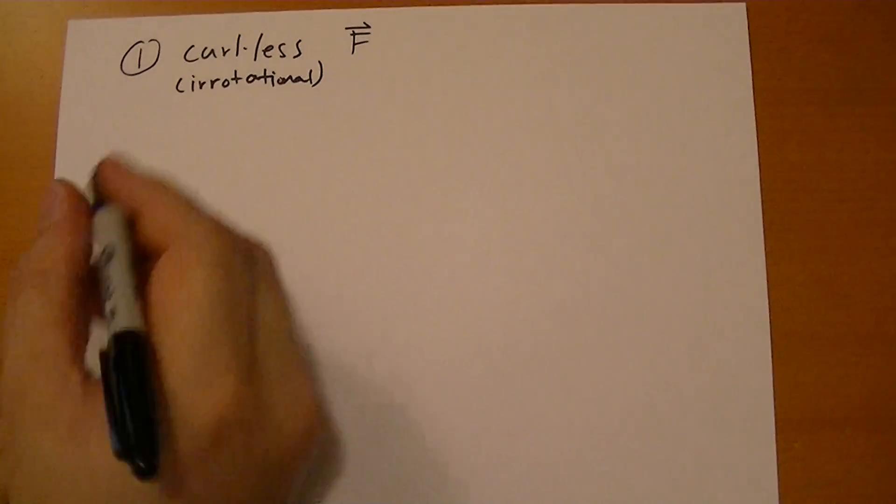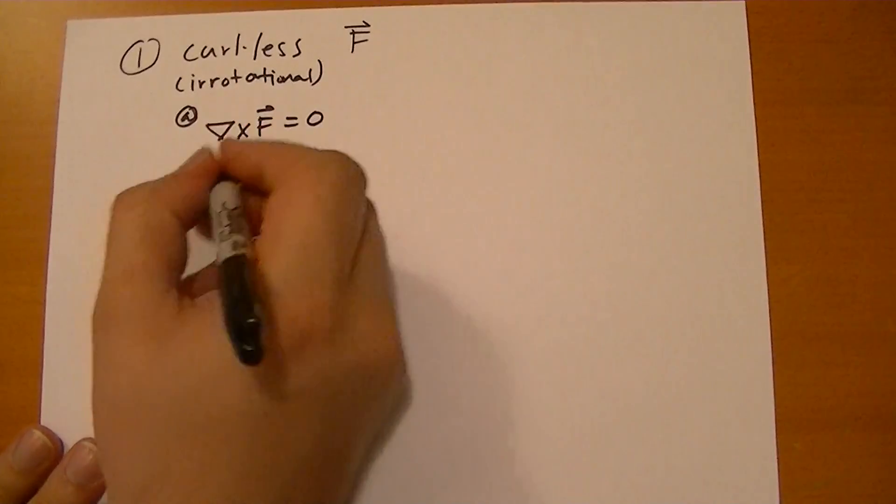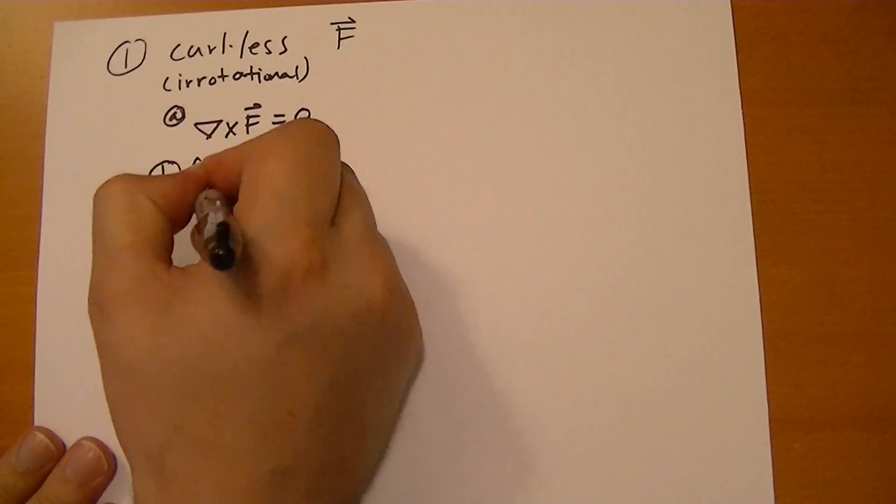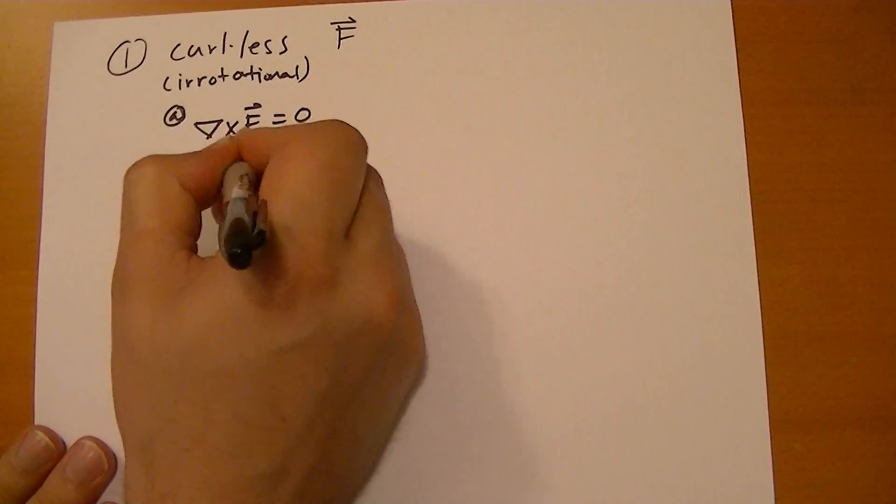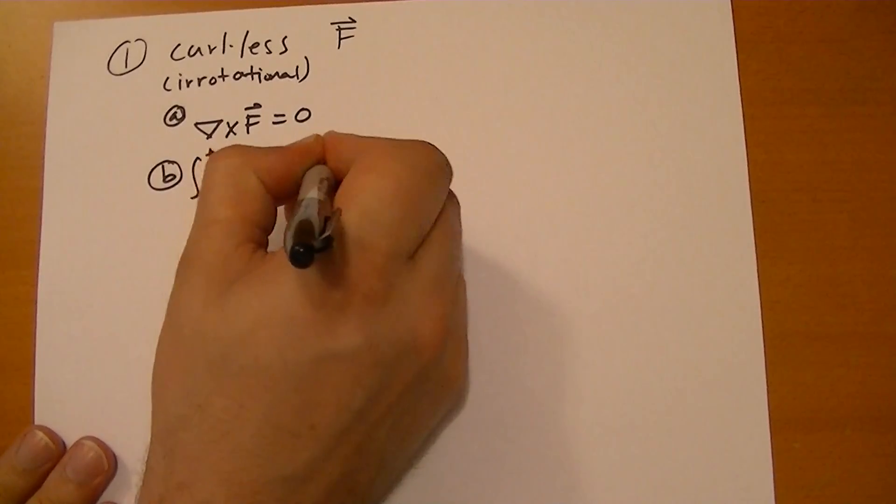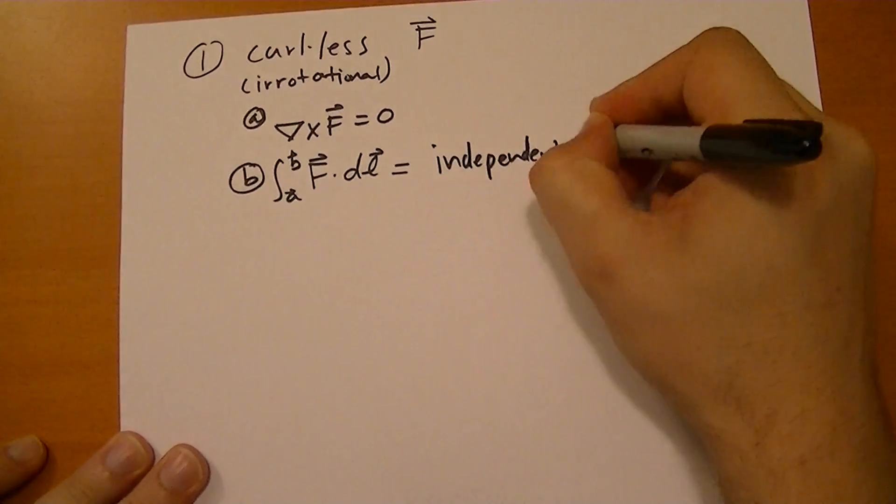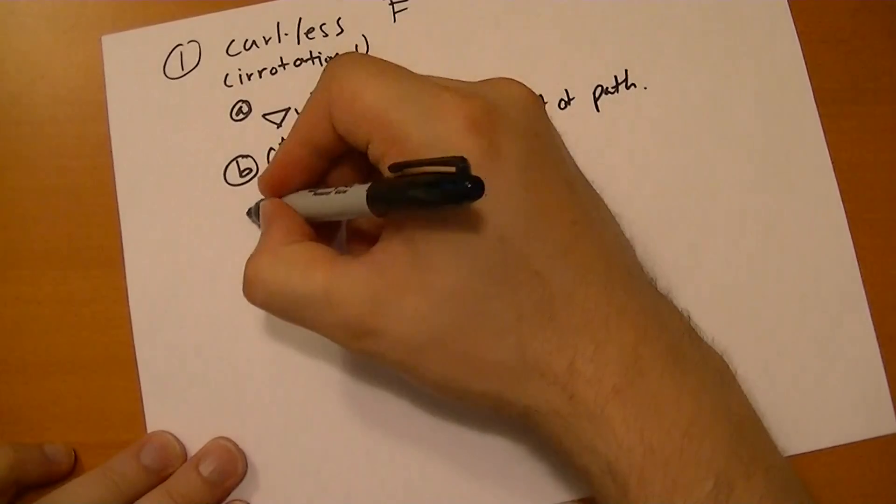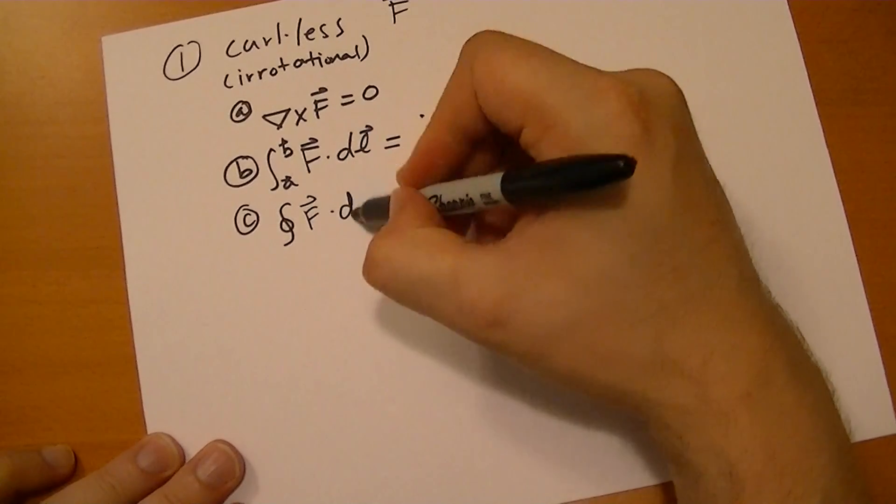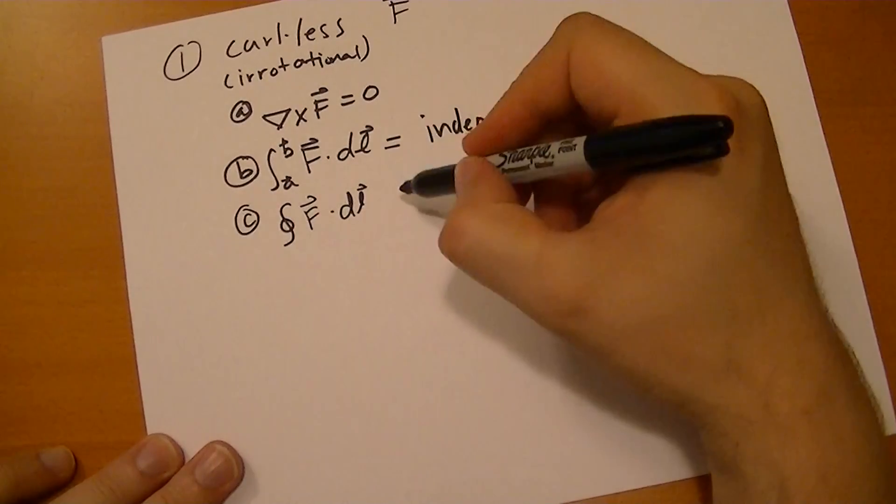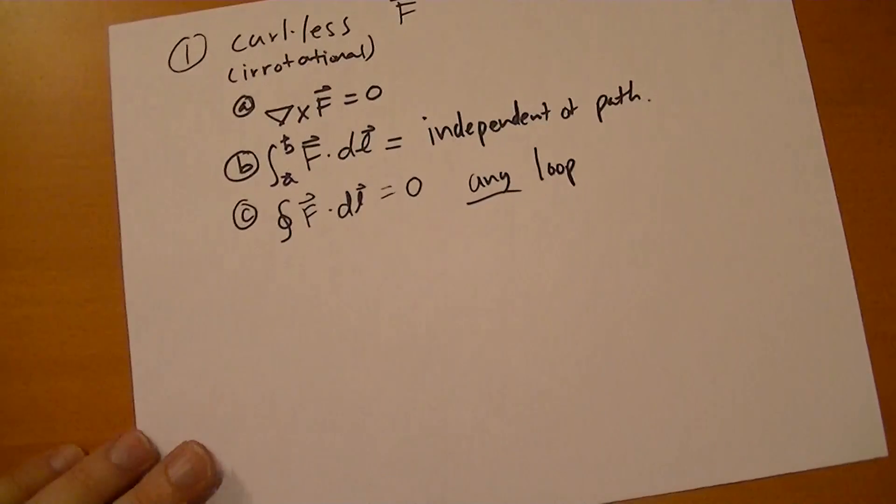So if the curl of F is zero, or if the integral from two vectors of that field dot the dL vector is independent of path, or if we have the closed loop integral for the same thing is equal to zero for any closed loop, any loop. So if you can find any loop where that's equal to zero.